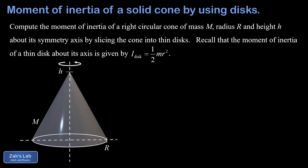In this video we're computing the moment of inertia of a right circular cone rotating about its symmetry axis. This cone has a mass of M, a height of h, and a radius of R. We're told in the problem we can get the moment of inertia by slicing it into thin disks, and we're reminded that the moment of inertia of a disk is one half times its mass times its radius squared.